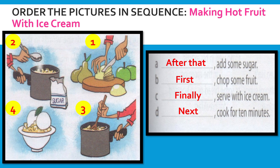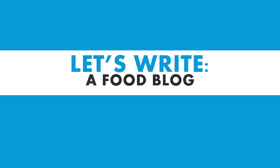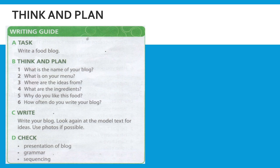So the sequence is: first, chop some fruit; after that, add some sugar; next, cook for 10 minutes; finally, serve with ice cream. Now let's move on to the final activity of our lesson today, which is to write a food blog on your own. This is a writing guide for you to think and plan before you start writing your food blog.